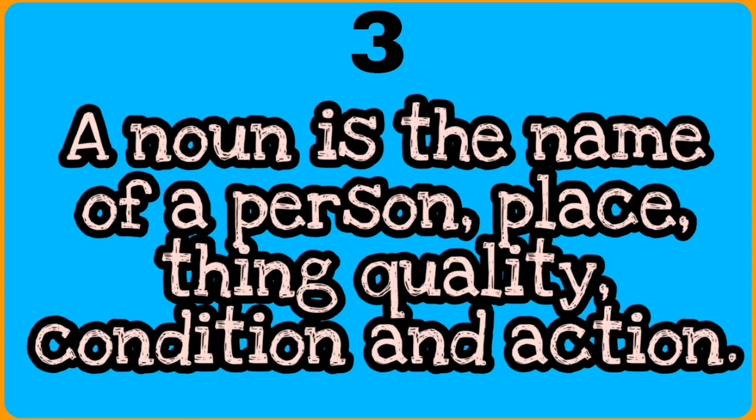The third definition is: a noun is the name of a person, place, thing, quality, condition and action. I repeat — a noun is the name of a person, place, thing, quality, condition and action.